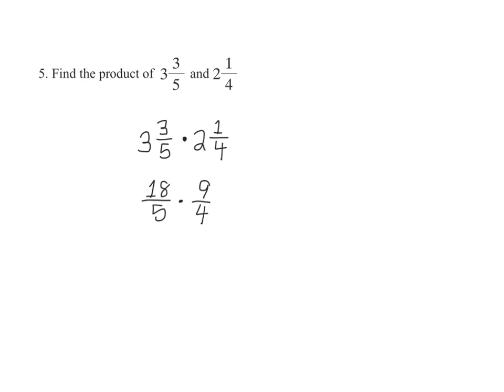Now we multiply as before. 18 times 9 is equal to 162 over 5 times 4 which is equal to 20.